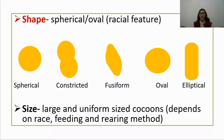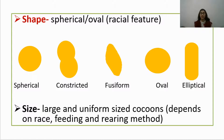The next desirable character is size. Large and uniform sized cocoons are preferred because large cocoons are easy to reel. Size is a race dependent character, but feeding and rearing method also have some effect. If feeding and rearing is not done properly, the larvae are not of equal size and you get small, unequal cocoons.